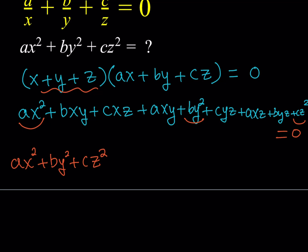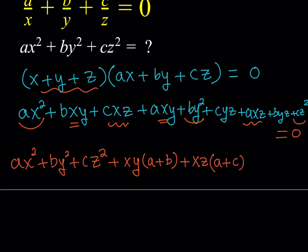For example, consider axy and bxy — they have a common factor of xy, so we can write it as xy times (a plus b). Then consider the xz terms: pulling out xz gives us (a plus c). And finally, the cyz and byz terms: pulling out yz gives us (b plus c). And this whole thing is again equal to zero.